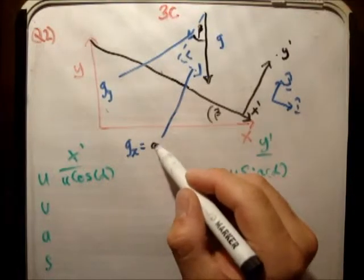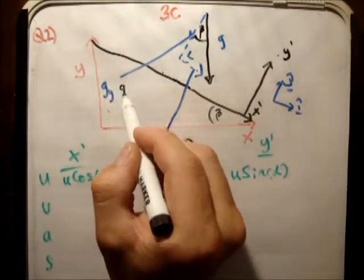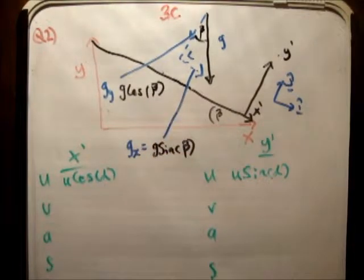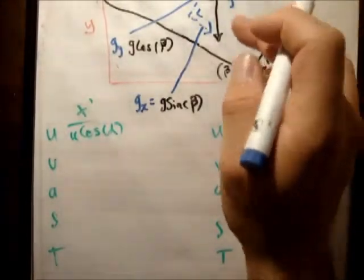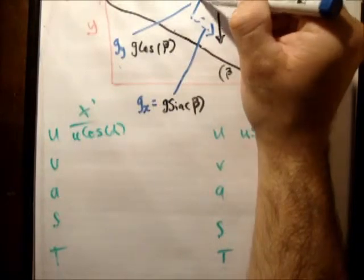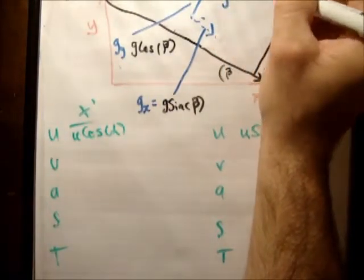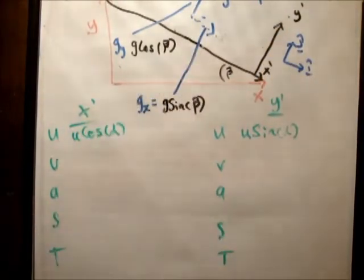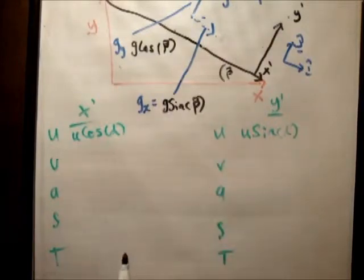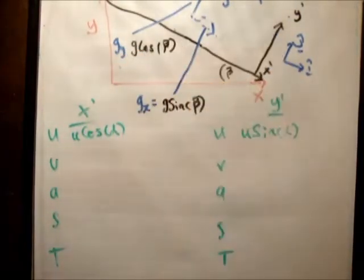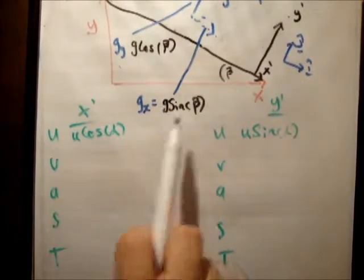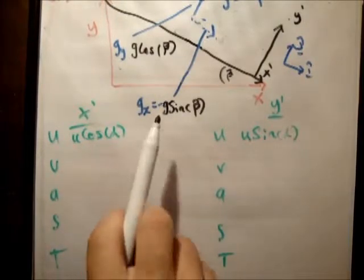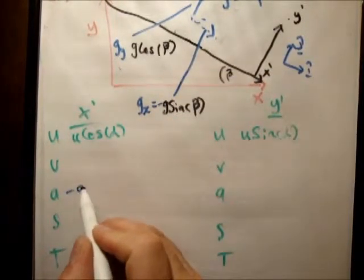Therefore, g sub x becomes g sine of beta, and g sub y becomes g cos beta — because cosine is for adjacent and sine is for opposite. Now, we define gravity as minus 9.81. Looking at the diagram, g sub x is in the positive x prime dimension, so it accelerates the particle in that direction and must be positive. So in actual fact, this gives us minus g sine of beta. And g sub y is g times cosine of beta.